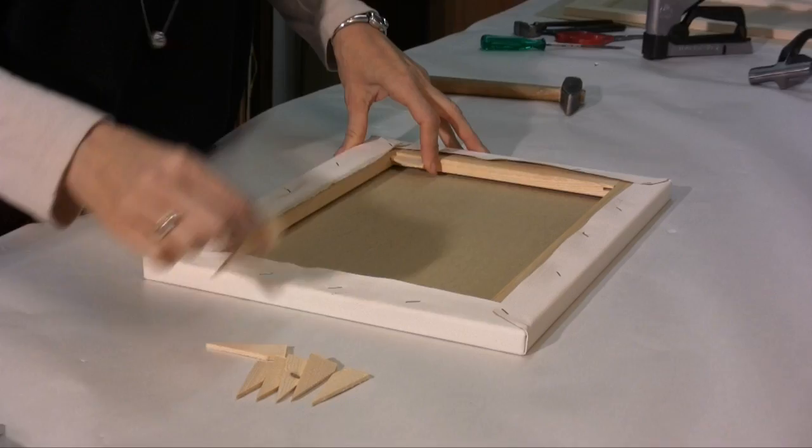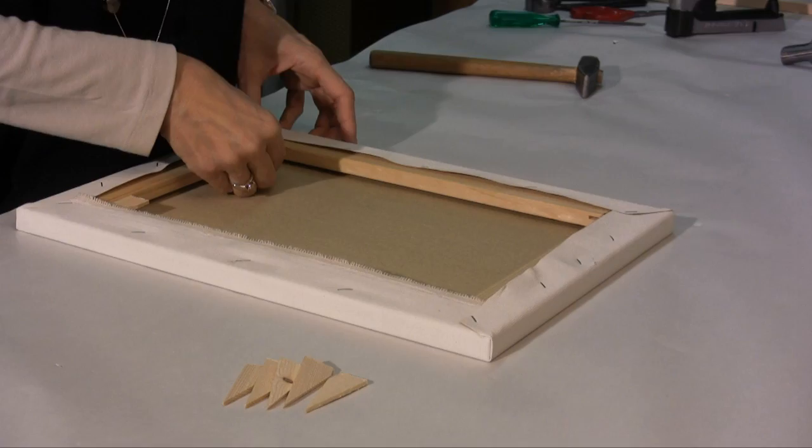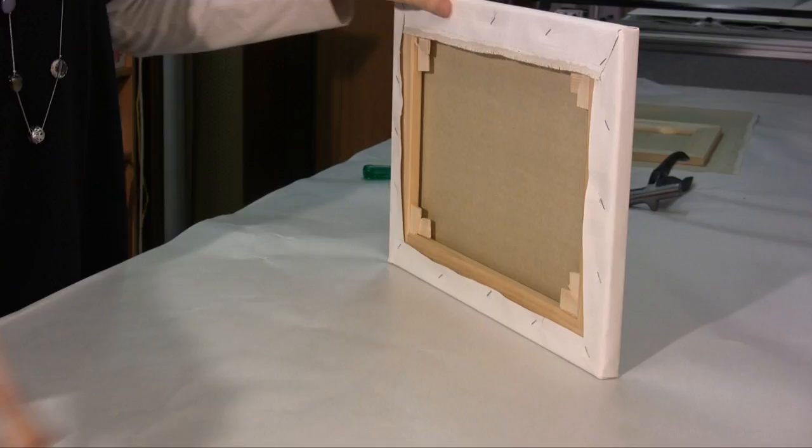At the end I insert the wedges in the appropriate cuts of the corners to hold the canvas even more. The wedges are then to be hammered equally in all four corners.